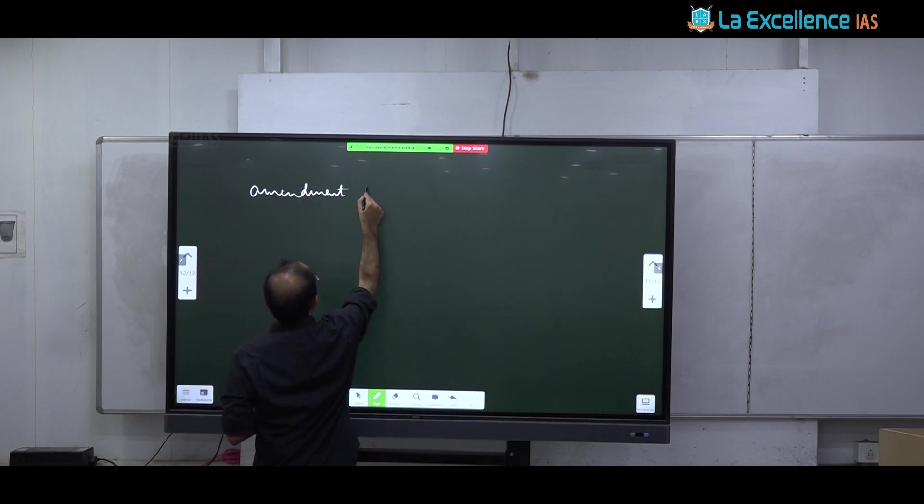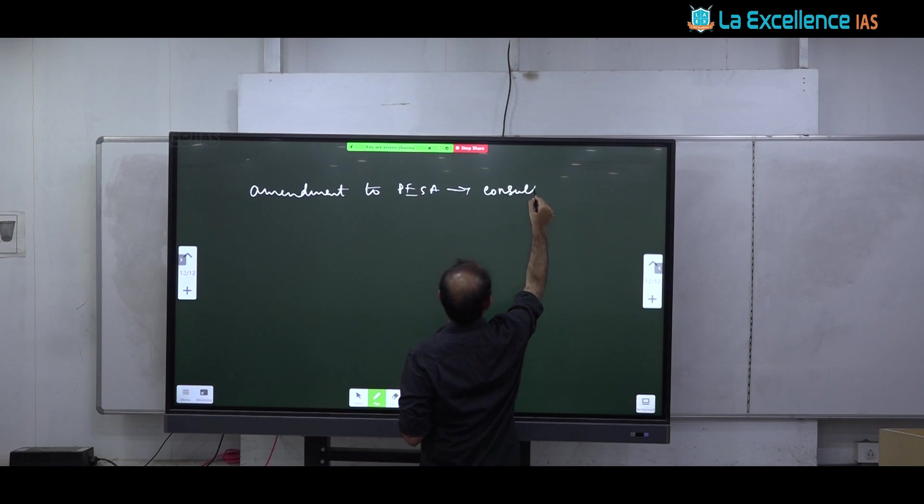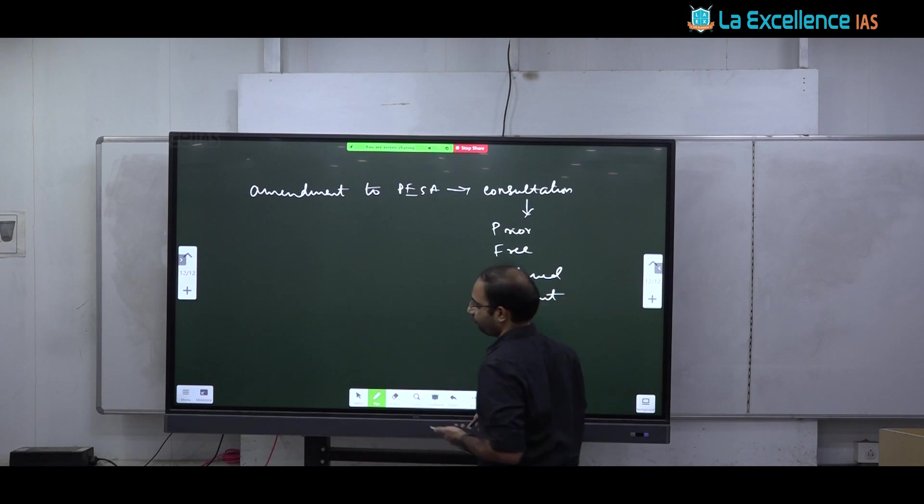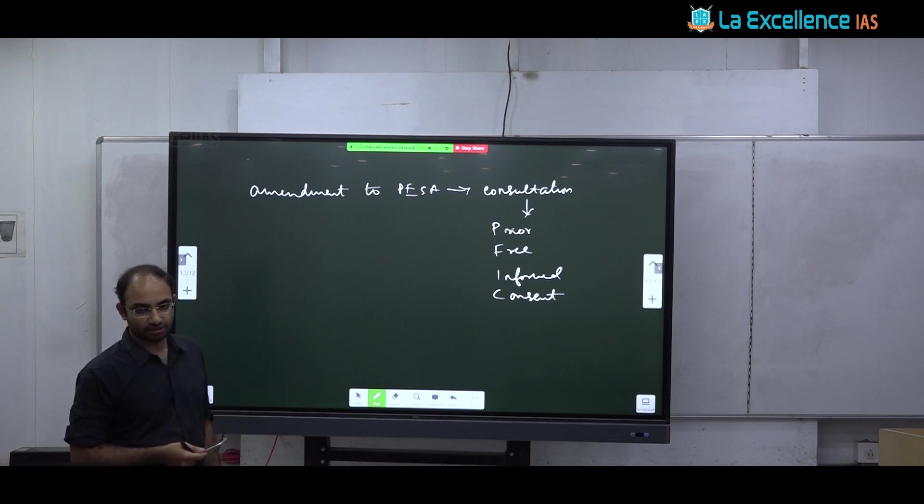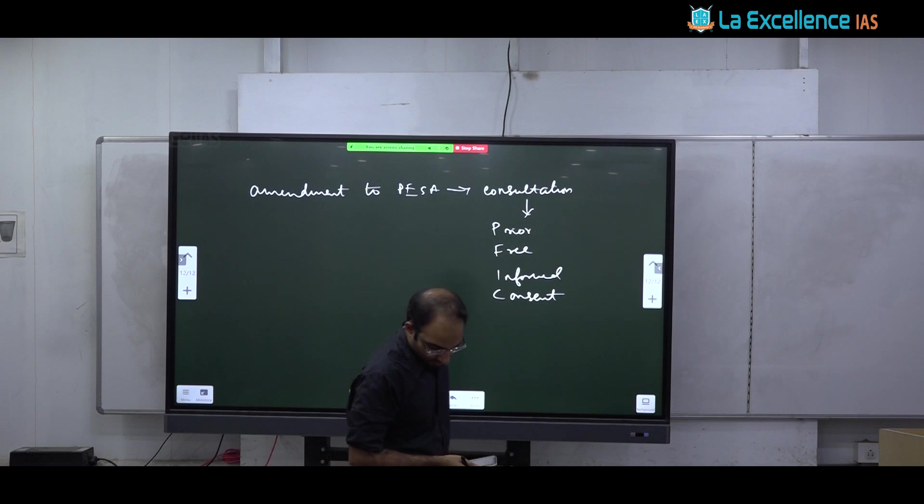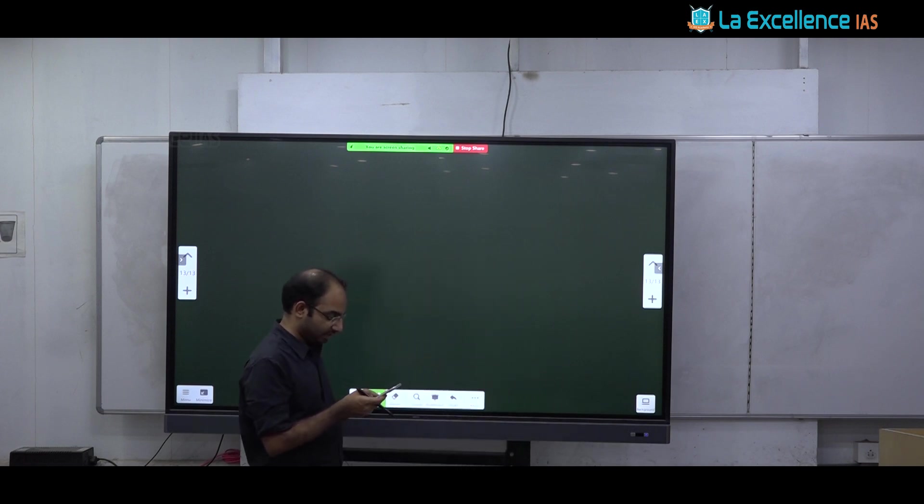Major issue is amendment to PESA to replace consultation with PFIC. That is prior, free, informed consent. That is the approach that is being suggested. Clear? So that is PESA. Tribal health many wrote well. I have nothing much to add except that you could have added some tribal health data. I will just mention data that you can use and otherwise the framework is same. Why tribal health is a problem? Many examples.